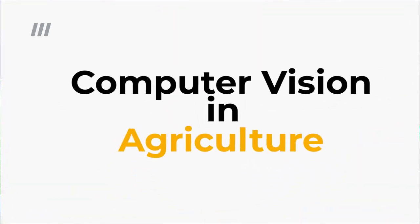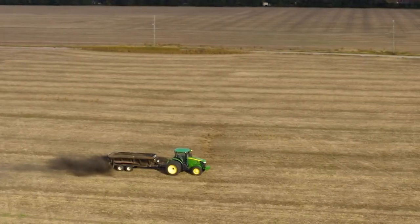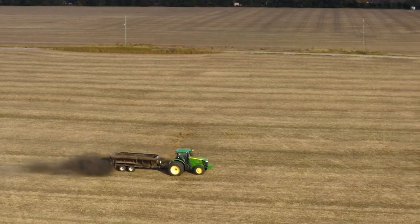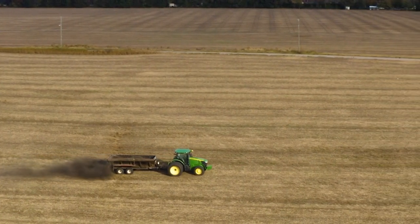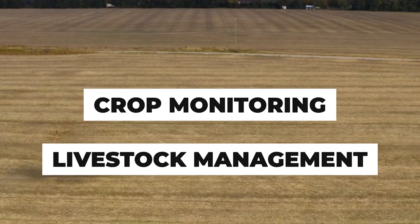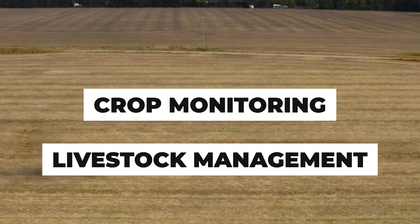Introduction to computer vision in agriculture — my favorite topic in the whole wide world. Computer vision plays an indispensable role in modern agriculture, particularly for tasks like real-time soil analysis, crop monitoring, as well as livestock management. This technology provides an extra set of eyes for automation, which enhances productivity and efficiency.